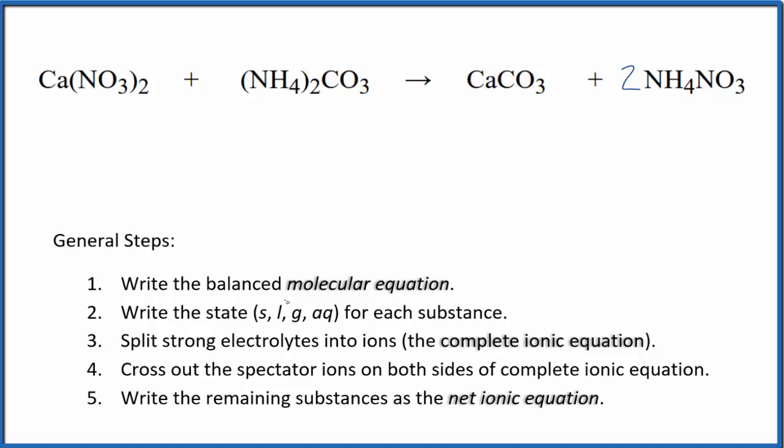Next, we need to write the state for each substance based on the solubility rules. That'll look like this. If you know your solubility rules, nitrates (NO3) are very soluble. So the calcium nitrate and ammonium nitrate are very soluble. And ammonium compounds are very soluble. This ammonium carbonate, we have the ammonium compound, that's going to be soluble.